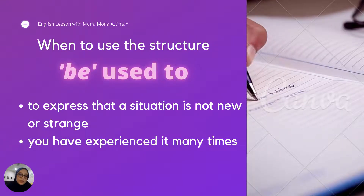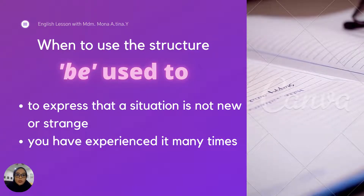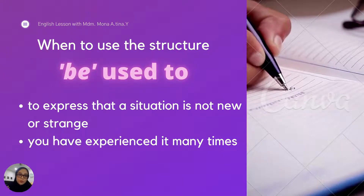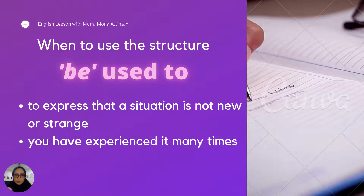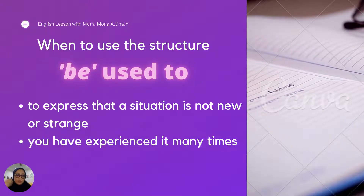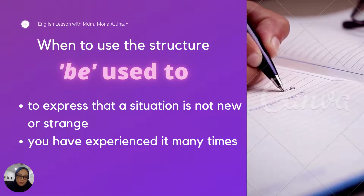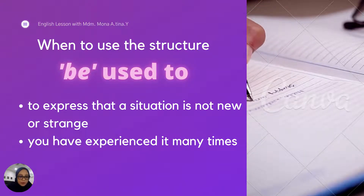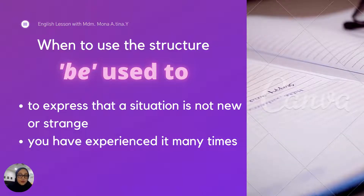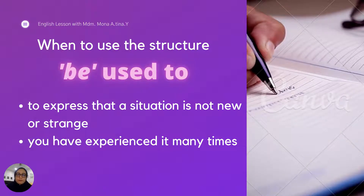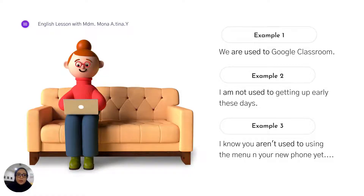When are we going to use this structure? We basically use this structure to express that a situation is not new or strange - something that you do normally. The difference between used to and be used to: be used to can be in present form, while used to is only in past form. It is also used when you have experienced something many times. So what are the examples? I have the positive one and the negative one, and this is the example from your textbook.